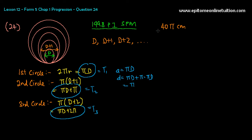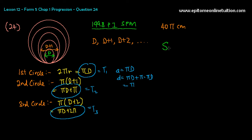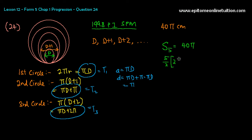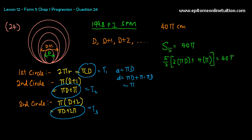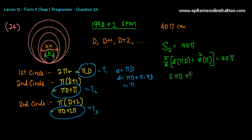Now you can form your equation. 40π is the total circumference for the five circles. Adding all of them up means S5 equals 40π. So that is 5/2 times [2A + (N−1)d], which is 5/2 times [2(πD) + 4(π)], equal to 40π. Expanding gives you 5πD plus 10π equals 40π.